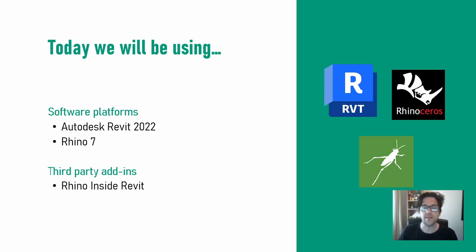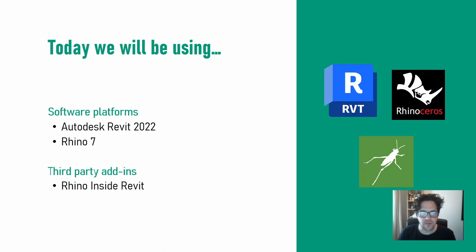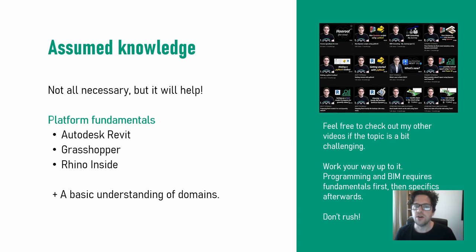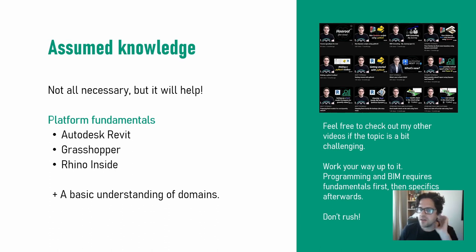I'll be using Autodesk Revit 2022, Rhino 7, and of course RhinoInside Revit. It's assumed knowledge that you understand basically how Revit, Grasshopper, and RhinoInside work. I'll also assume you have a very basic knowledge of domains and surfaces — the U and V aspects of surface mapping — but I'll explain it as I go, so a little background can help.